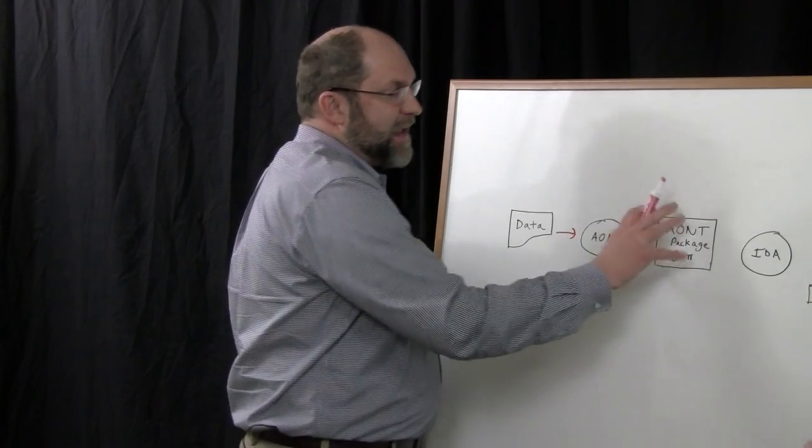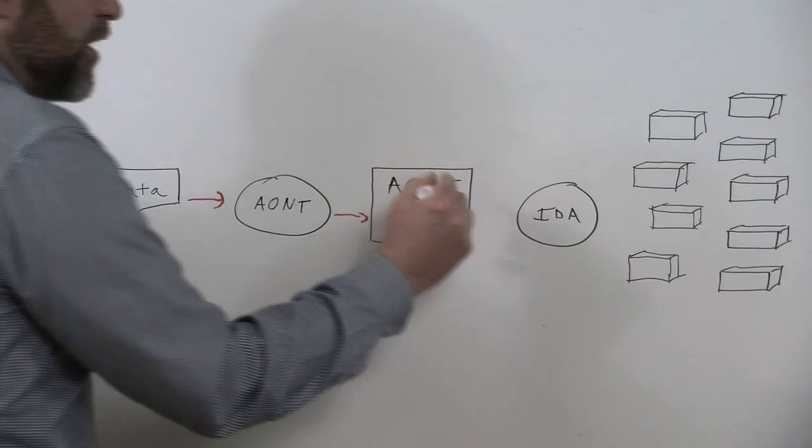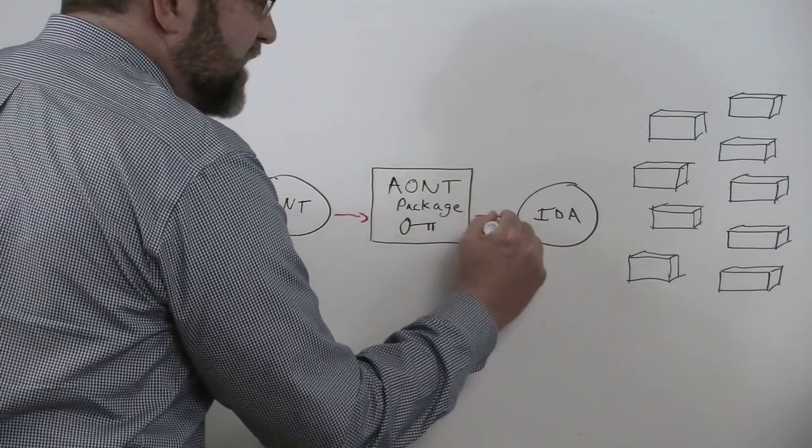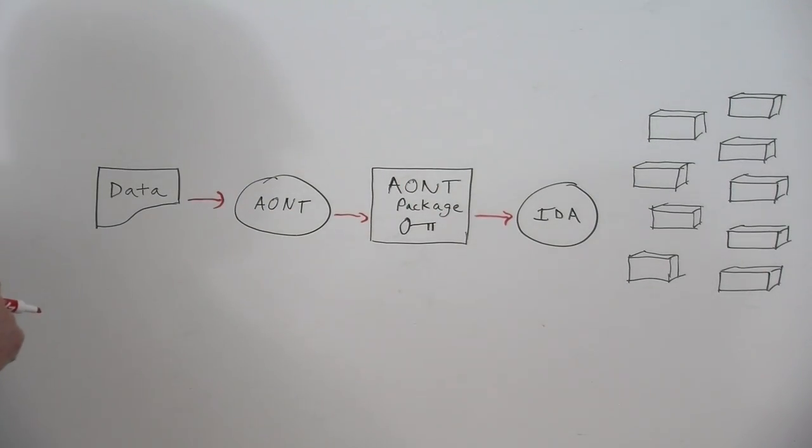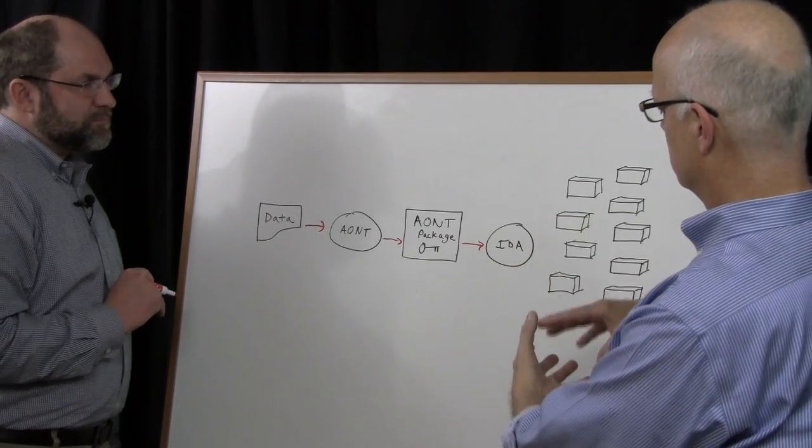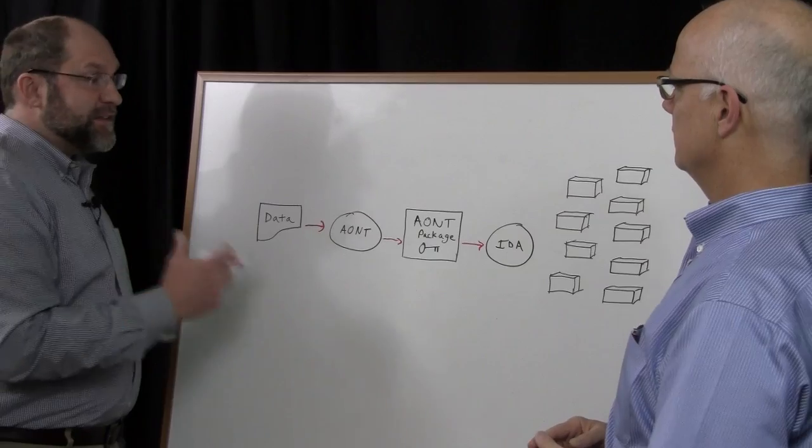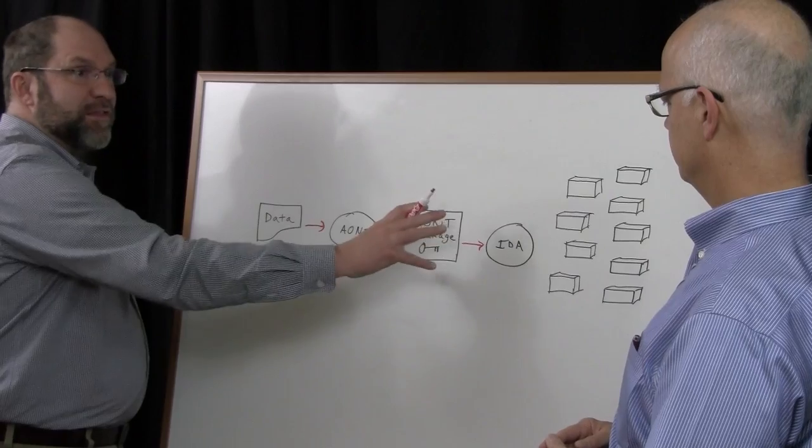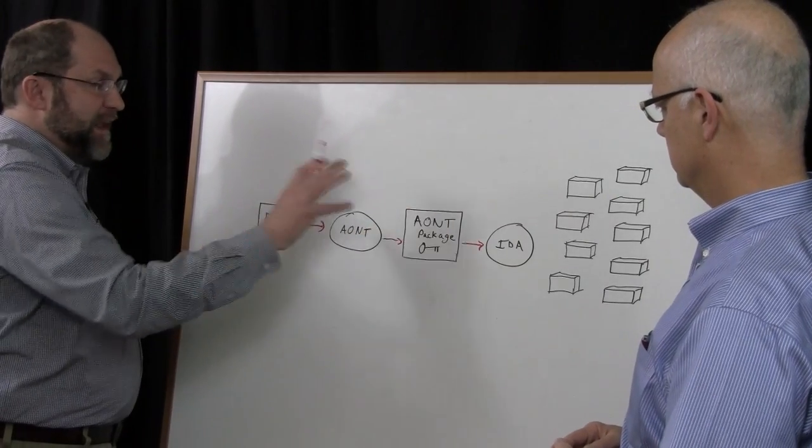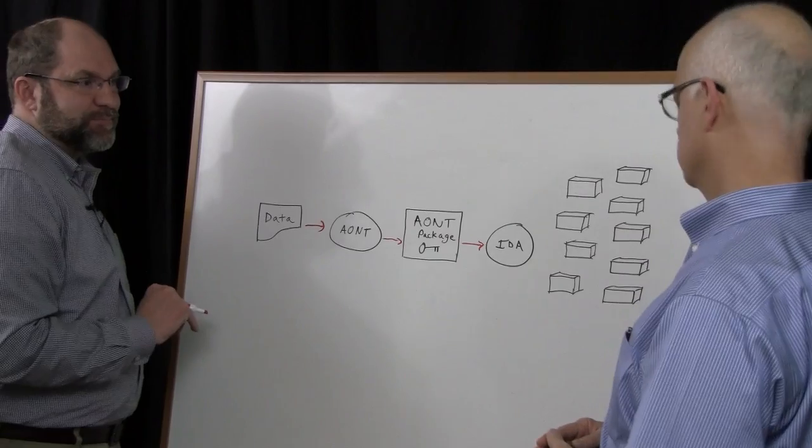So then taking this encrypted form of the data and the key all packaged together, we pass that as an object to our information dispersal algorithm for storage in the DSNet. So if I could just jump in here then. So the encryption key is sent into a package or into an object itself? Exactly. It travels along with the data. And therefore it doesn't have to be managed as a separate entity through a separate system. That makes sense.